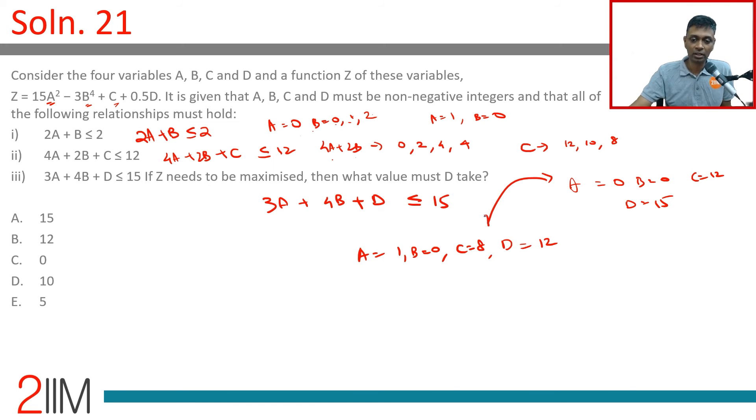15A² will not exist. -3B⁴ will be 0. C is 12 plus 15/2. This case will have 15 - 0 + 8 + 12/2. This alone is 15. 15 + 8 is 23 + 6, 29. This: 12 + 7.5, 19.5. This is greater than this. This scenario works. What is the value D must take? D must take value 12. A should be 1, B should be 0. That combination works best.